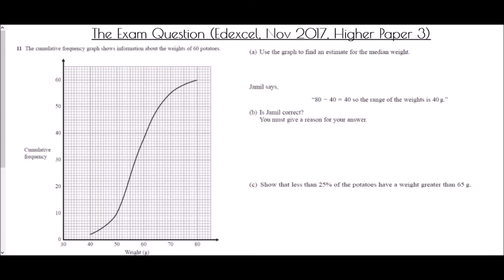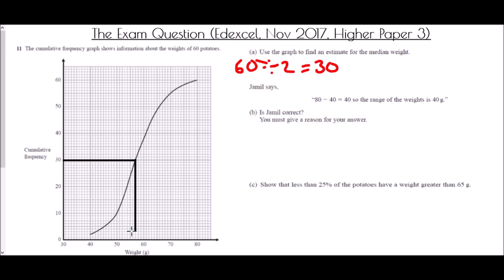Finally we come to the exam question — Edexcel November 2017 higher paper 3, so we can use a calculator. The cumulative frequency graph shows information about the weights of 60 potatoes. We need to find an estimate for the median weight. With 60 potatoes, the median is halfway — 60 divided by 2 is 30. Finding the 30th value on the cumulative frequency axis, drawing a line straight across and then straight down, gives a weight of 57 grams. That is my estimate for the median.